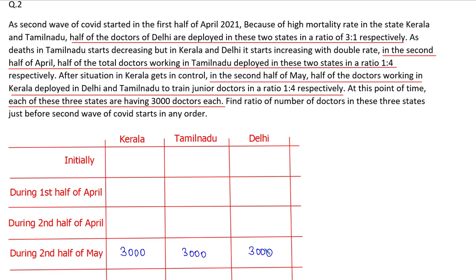During the second half of May, half of the doctors working in Kerala are deployed in Delhi and Tamil Nadu. There are 3000 doctors in Kerala during the second half of May. Since half of the doctors were distributed between Tamil Nadu and Delhi, before the second half of May Kerala must have had 6000 doctors — half of 6000 is 3000.